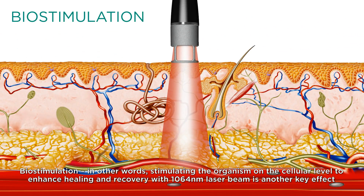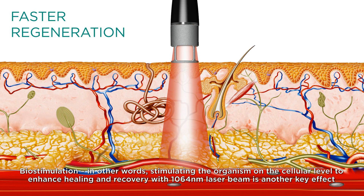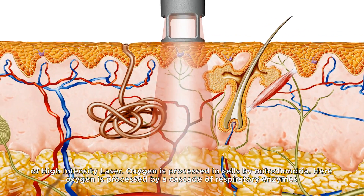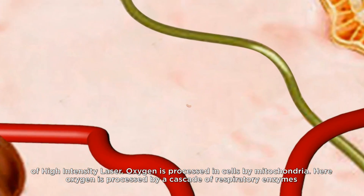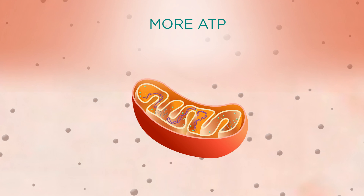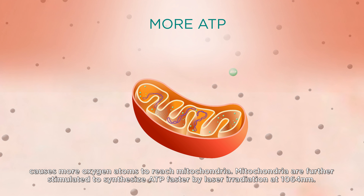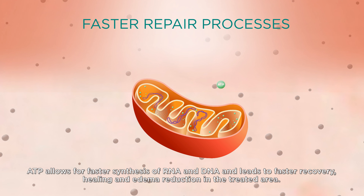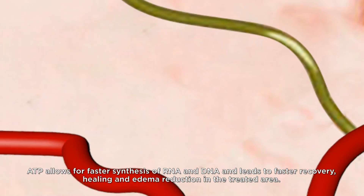Biostimulation — stimulating the organism on the cellular level to enhance healing and recovery — is another key effect of the 1064 nanometer high-intensity laser. Oxygen is processed in cells by mitochondria, through a cascade of respiratory enzymes, and delivered to ATP synthase, which synthesizes ATP, the organism's source of energy. A faster exchange of oxygen and metabolites due to laser irradiation causes more oxygen atoms to reach mitochondria. Mitochondria are further stimulated to synthesize ATP faster by laser irradiation at 1064 nanometers, allowing for faster synthesis of RNA and DNA, leading to faster recovery, healing and edema reduction in the treated area.